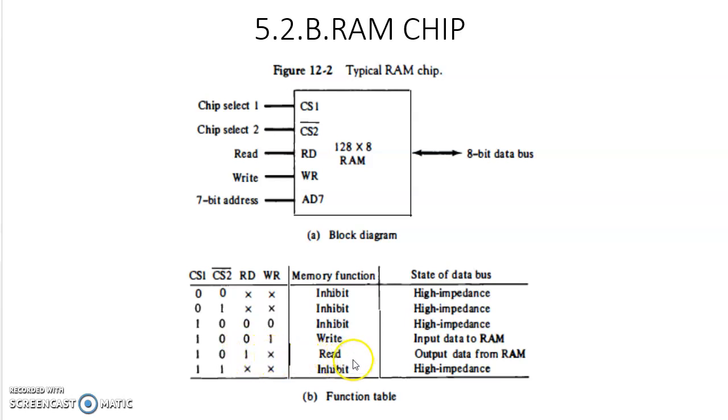If read is 1 irrespective of write, read operation will be performed. If read is 0 and write is 1, then only write operation is performed. When both are 0, that means inhibit, nothing will happen in high impedance state. When both CS1 is 1 and CS2 is not 0, then read and write does not care because the chip is not selected and will not be used.